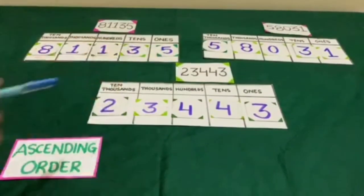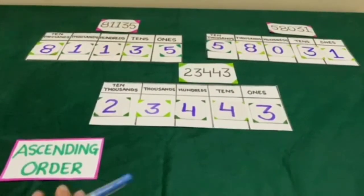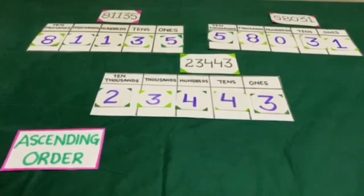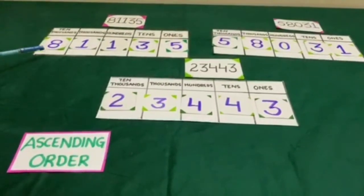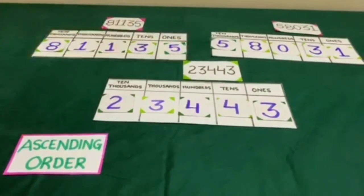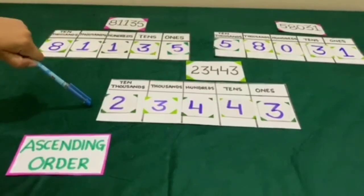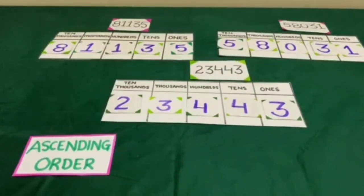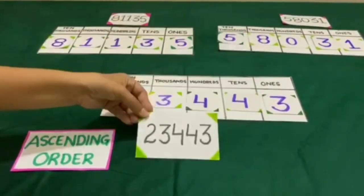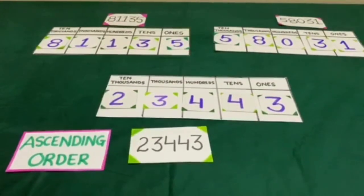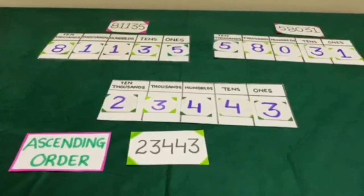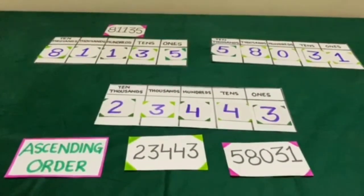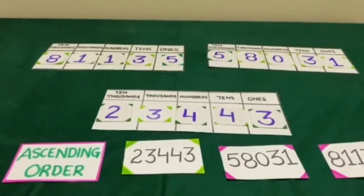Now we will arrange these numbers in ascending order. In ascending order, the smallest number comes first and the greatest comes last. At the ten thousandths place, one number has 8 (80,000), another has 5 (50,000), and another has 2 (20,000). Among 8, 5, and 2, the smallest is 2. So the first number in ascending order is 23,443. The next smaller of the remaining two is 58,031, and the last number in ascending order is 81,135.